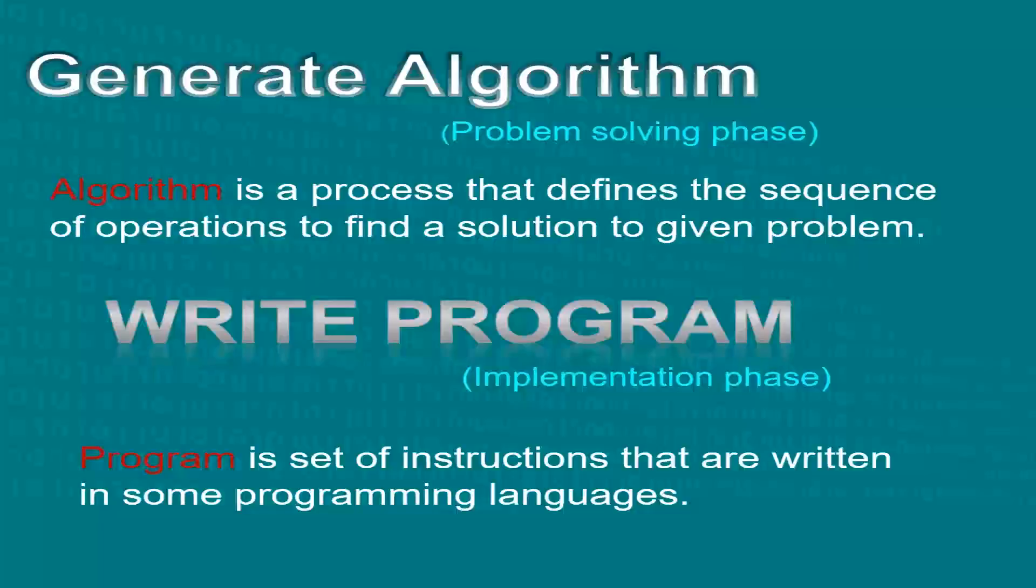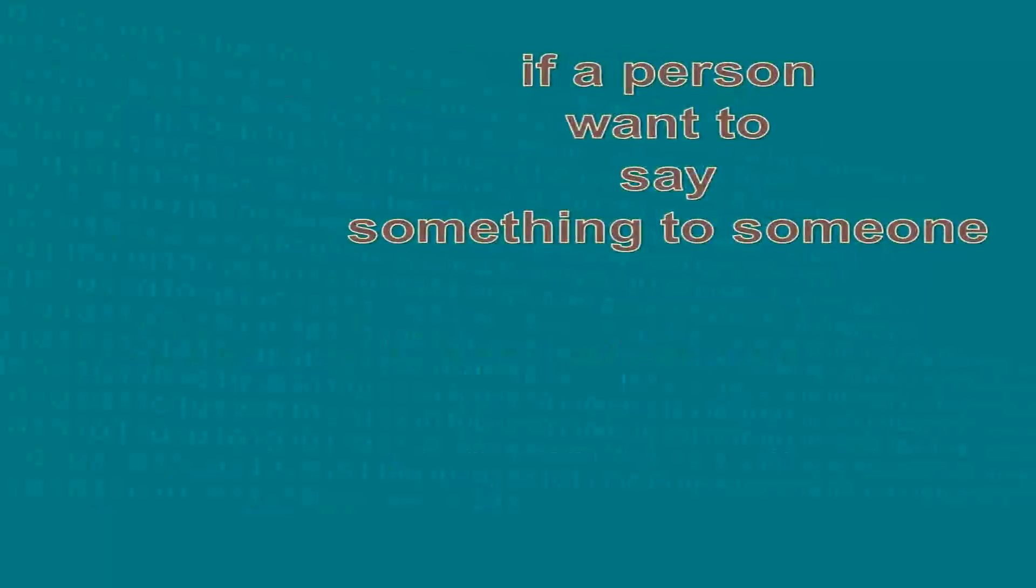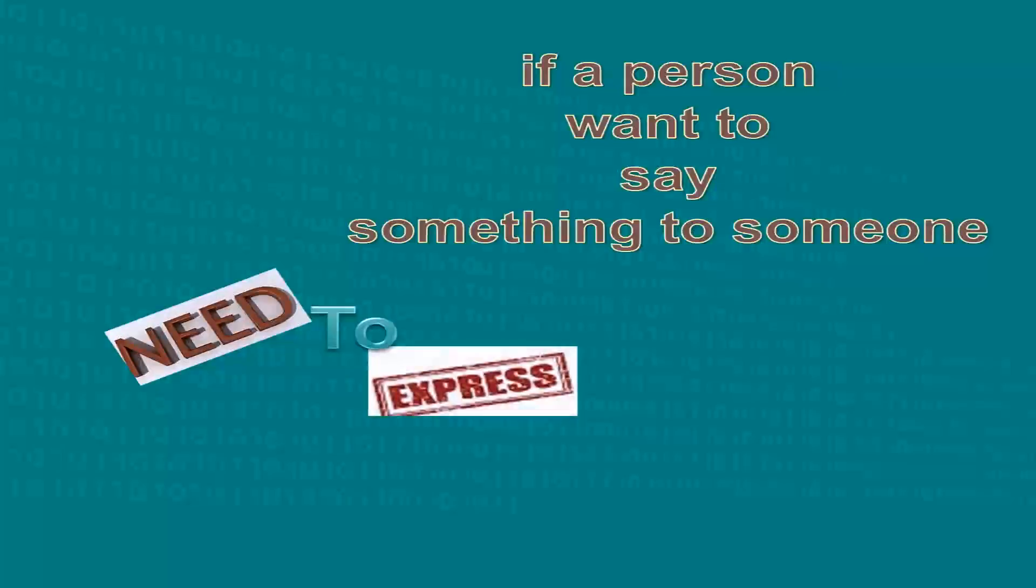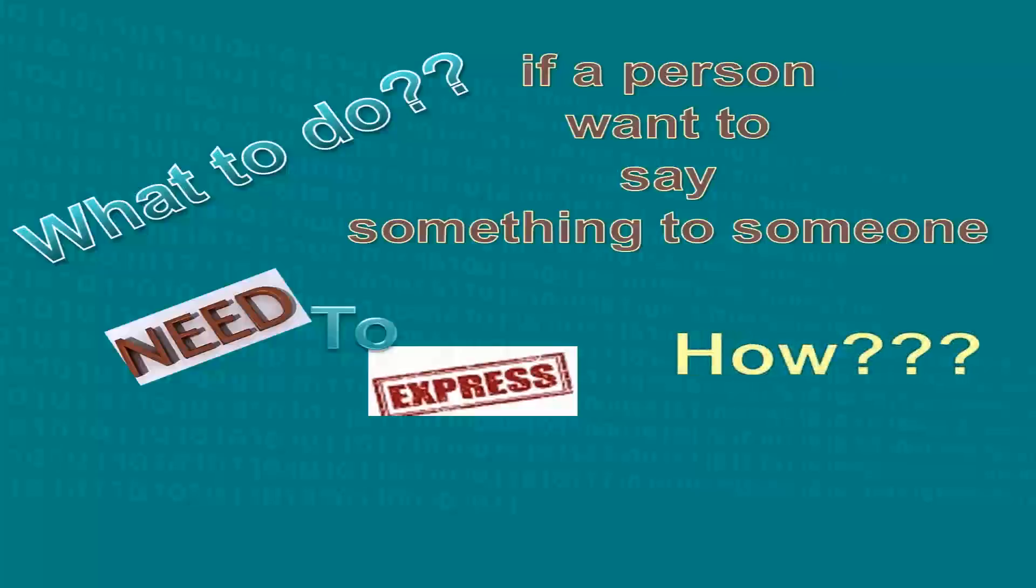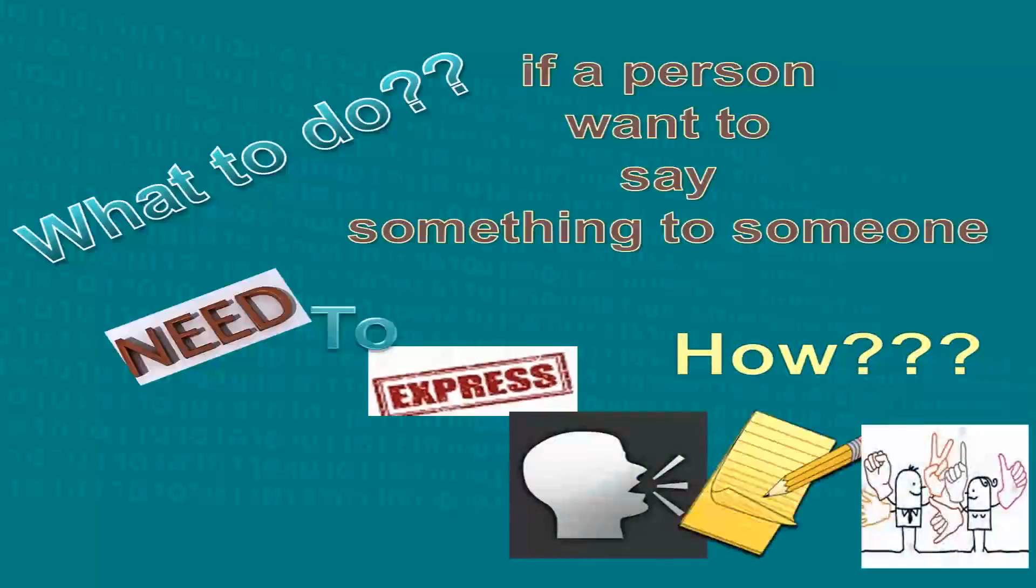But the question is, how does all this happen? Well, supposing I wanted to say something to someone or I feel the need to express myself. What can I do? I can simply say it out verbally or write a letter, email or a text message to the person. The same case is with algorithms.